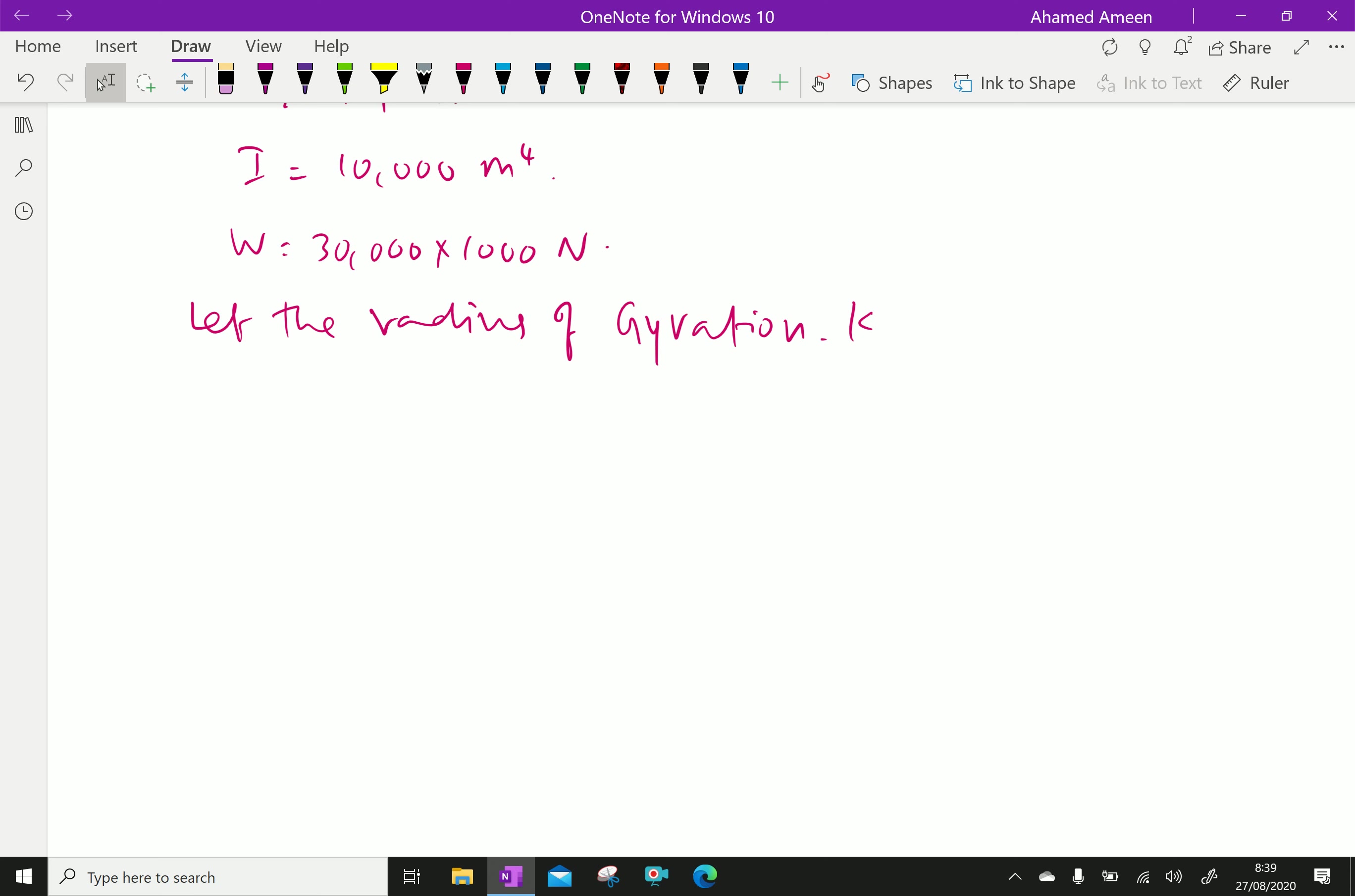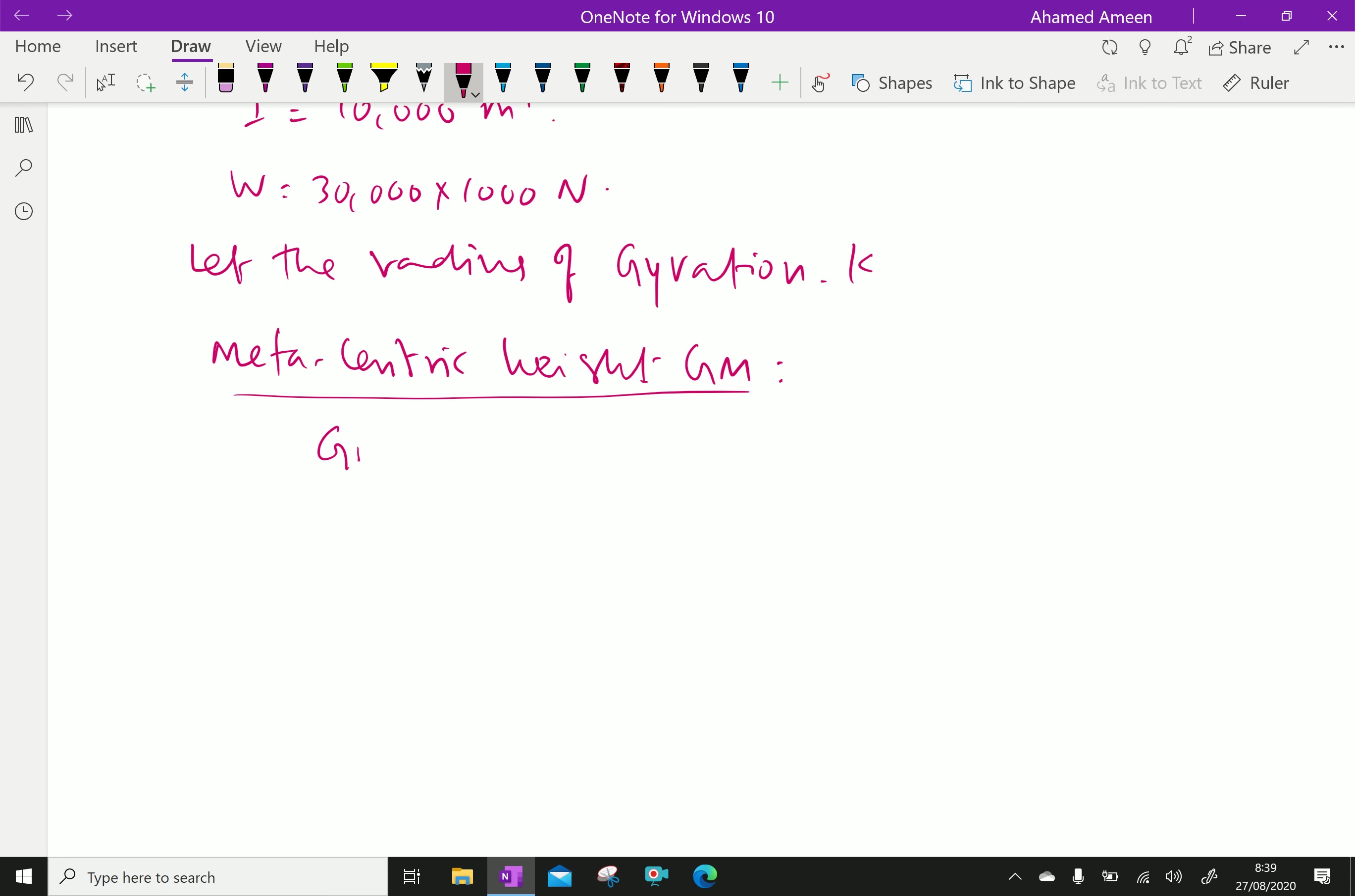First calculate metacentric height. Metacentric height gm equals BM minus BG, that is by formula we have I over V minus BG.